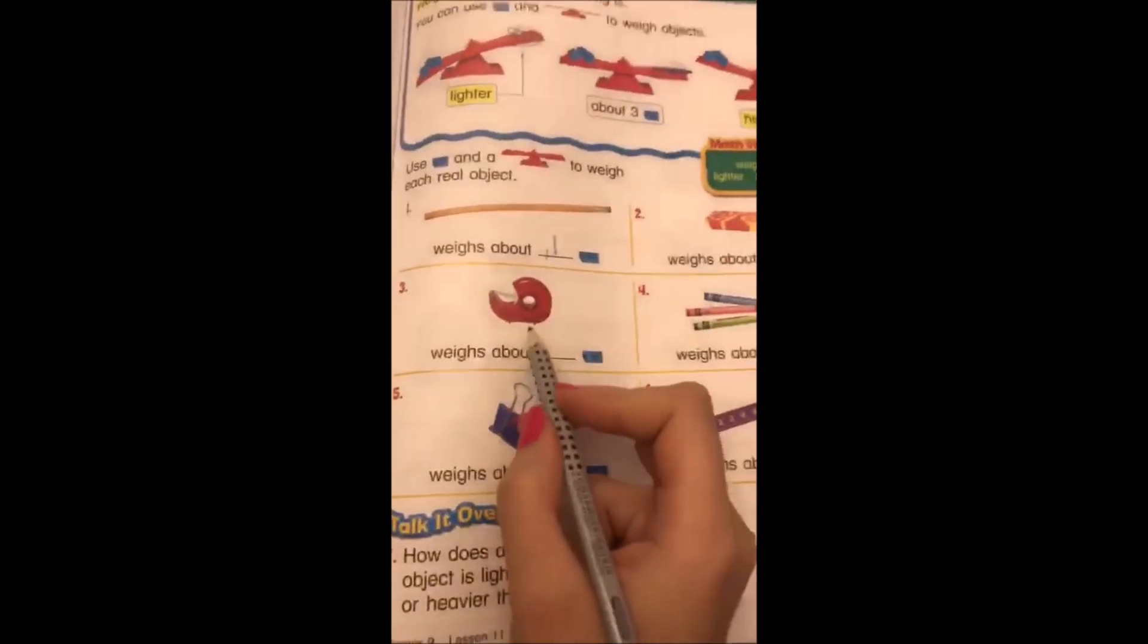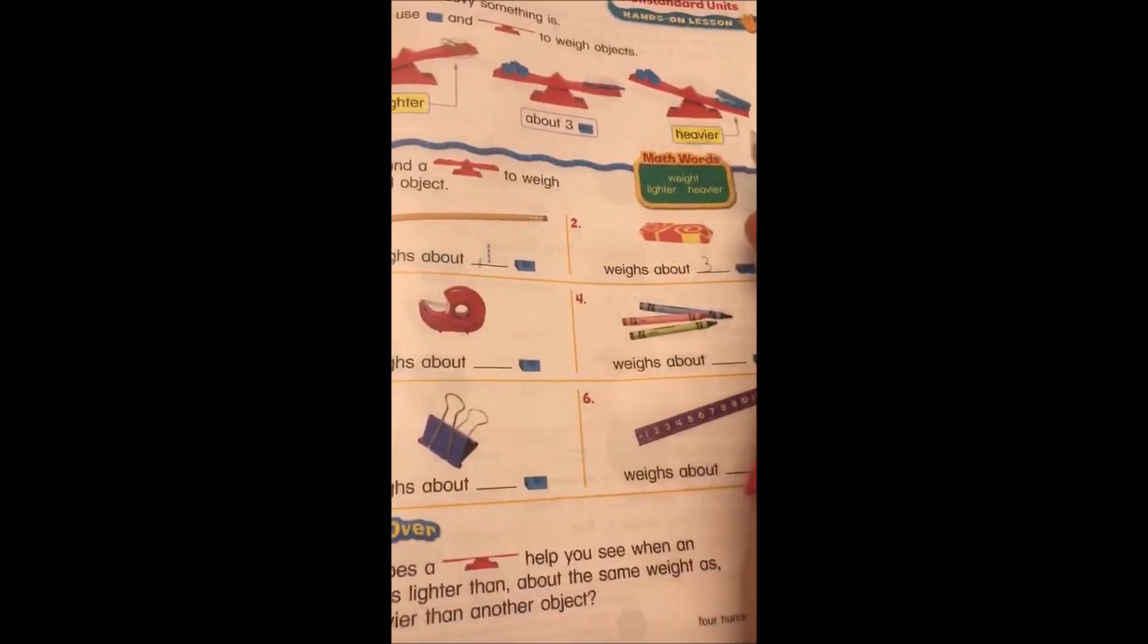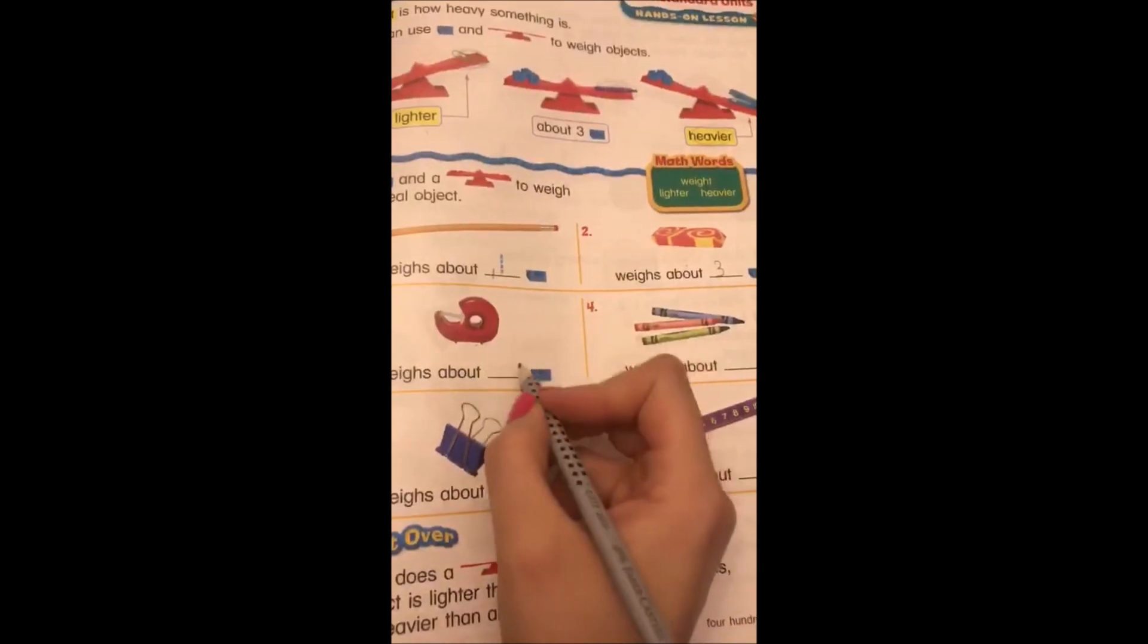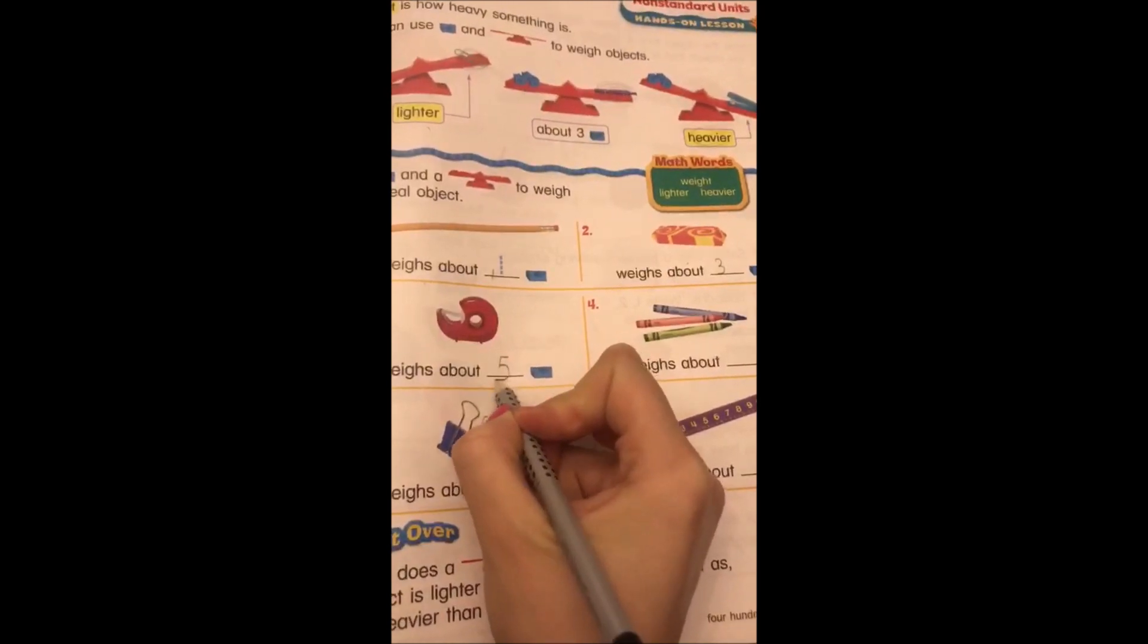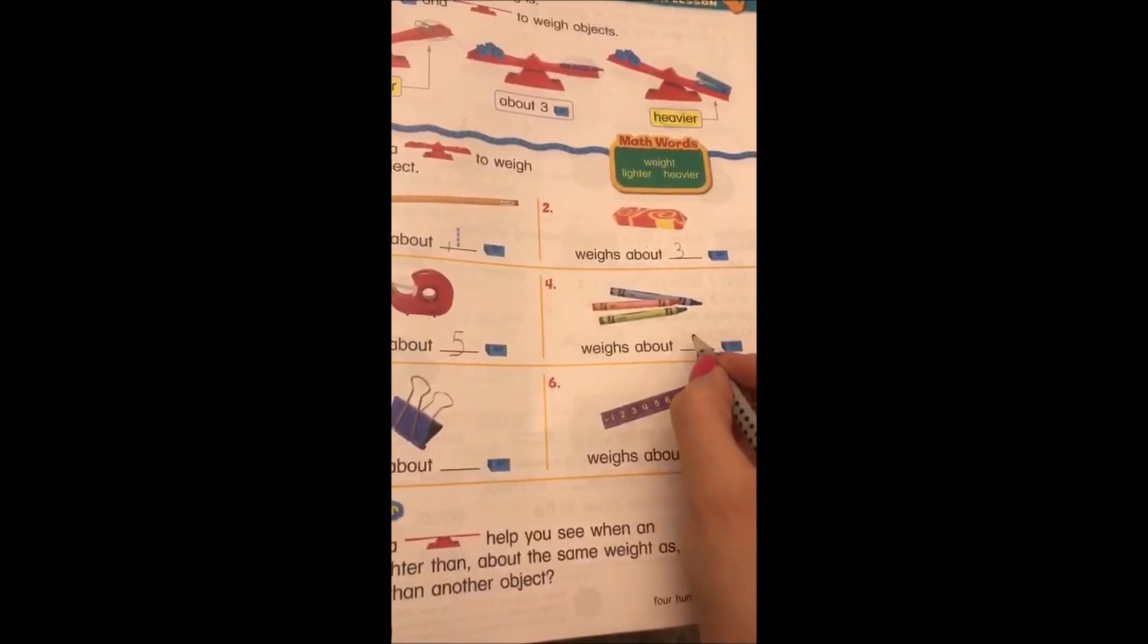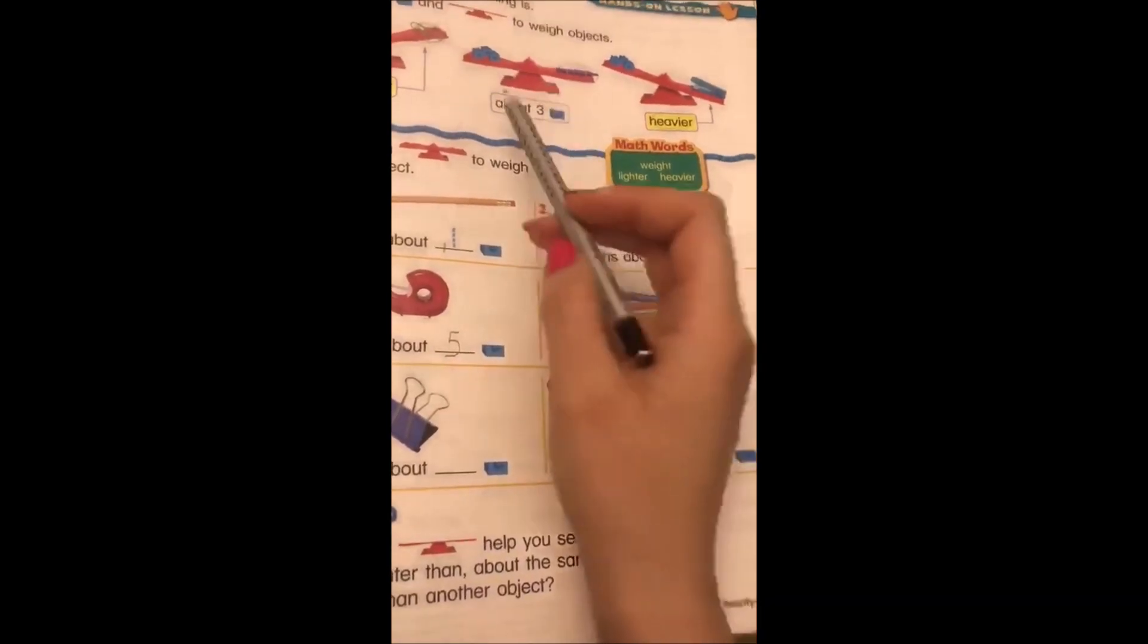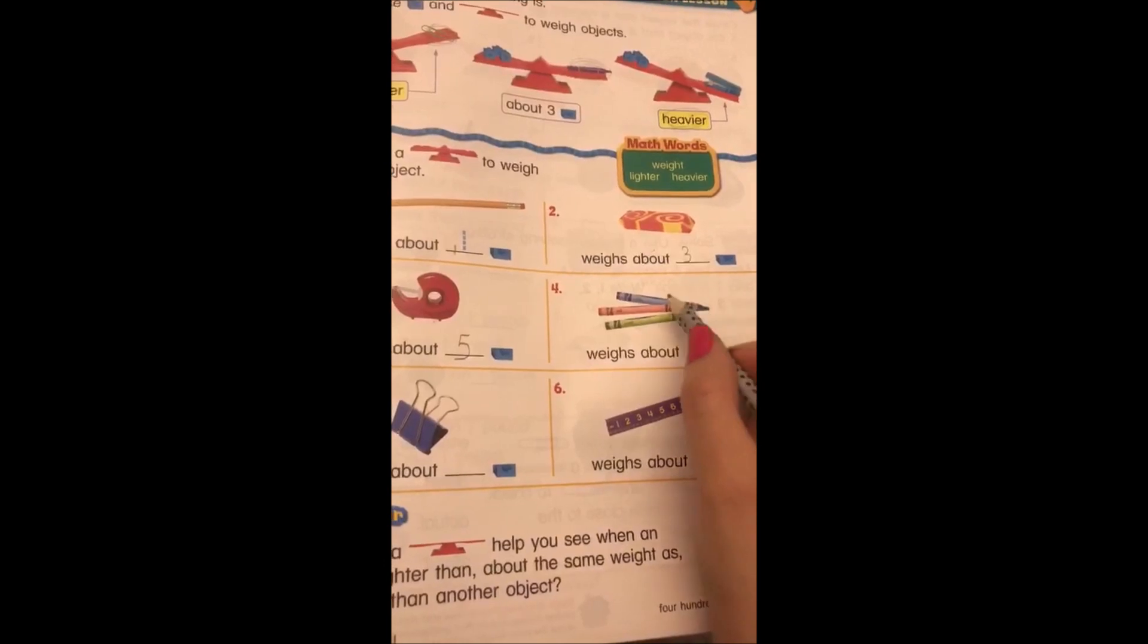In here, this one could be a little bit more than three, so I would say it could be for example, let's say five, or even four is correct. Now in here I have those three crayons this time, so it could be about, let's say, if a marker is three, so this could be three as well because it's a small marker, so we can have like one, two, three, four, five, six, could be seven in here.